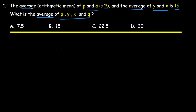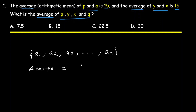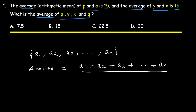What we have here is a number that is a1, a2, a3. To calculate their average, the formula is: average is equal to the sum of all the values divided by the number of values.